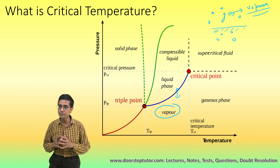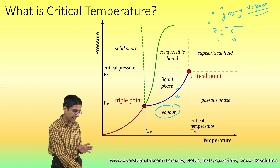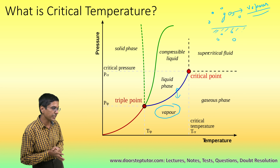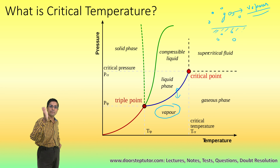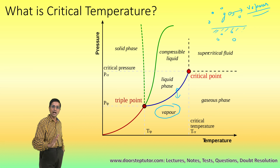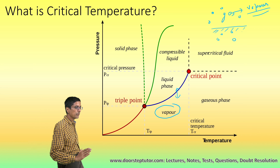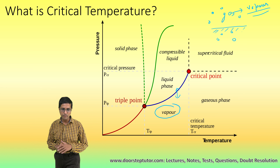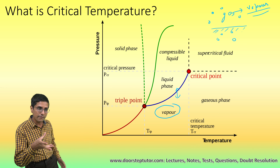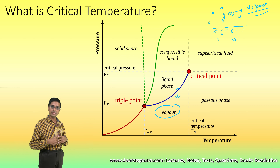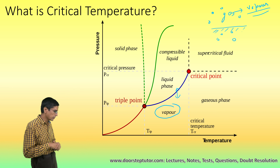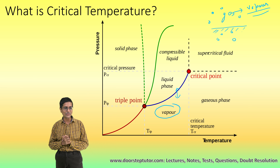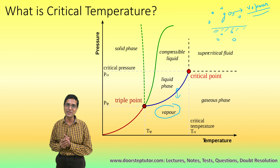Hopefully this distinction is very clear. Like I said, it is important for our Olympiad exam. The distinguishing point is the critical temperature. Above it, we have the gas phase; below it, we have the vapor phase. If you have questions, doubts, or other similar terminology problems, put them in the comments below and we'll be happy to bring classes on those topics as well. Thank you.